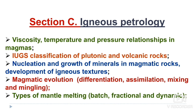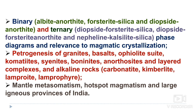Section C is igneous petrology. Topics include viscosity, temperature, and pressure relationships in magmas, IUGS classification of plutonic and volcanic rocks, nucleation and growth of minerals in magmatic rocks, and development of igneous textures. In magmatic evolution you have to study differentiation processes, assimilation, mixing and mingling, and types of mantle melting: batch melting, fractional melting, and dynamic melting — a question on batch melting was asked previously. Binary and ternary phase diagrams are also important.